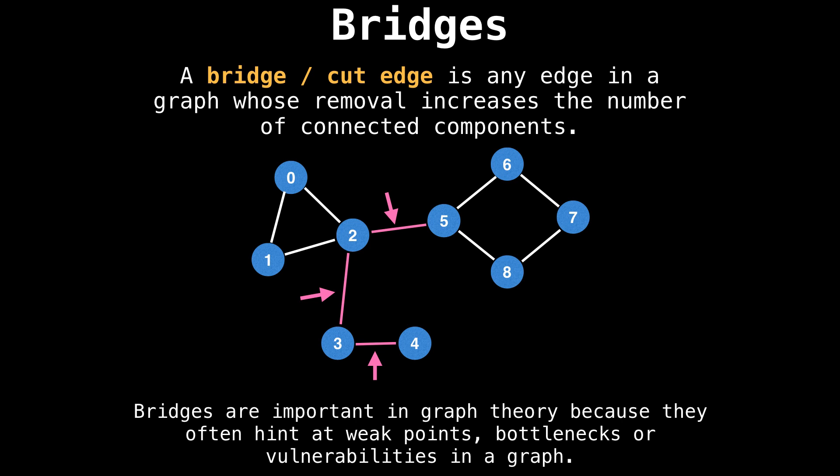Bridges are important in graph theory because they often hint at weak points, bottlenecks, or vulnerabilities in a graph. Think of your graph as a telephone network or a set of bridges between islands; you can immediately see the usefulness of detecting bridges.